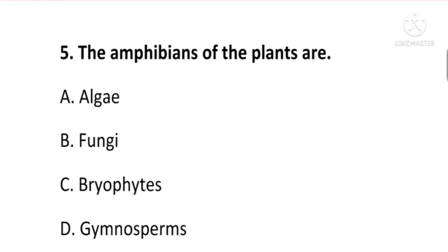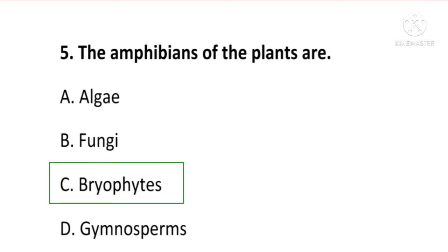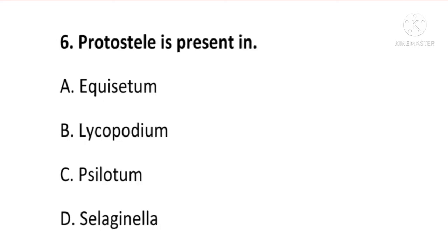Next question: the amphibians of the plant kingdom are called — algae, fungi, bryophytes, or gymnosperms? The answer is C, bryophytes. The amphibians of the plant kingdom are called bryophytes. C is the correct option.